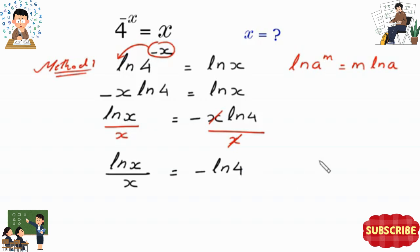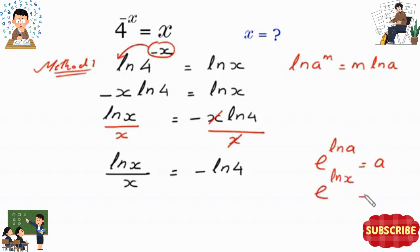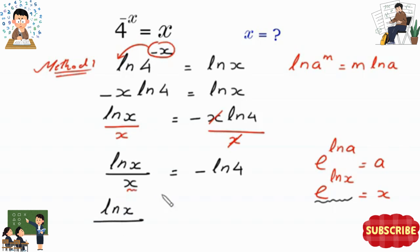According to the natural log property, e to the power ln of a is equal to a, so e to the power ln of x equals x. We replace this x with e to the power ln of x, giving ln of x divided by e to the power ln of x equals negative ln of 4.